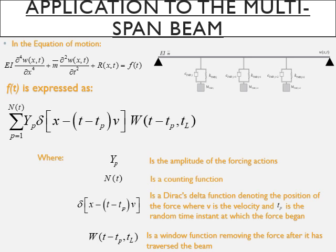Where Yₚ is the amplitude of the forcing actions which are independent, N(t) is a counting function, δ_Dirac of x minus (t-tₚ) multiplied by v, the velocity.